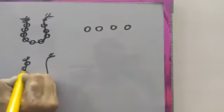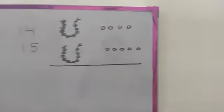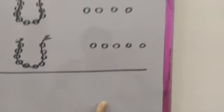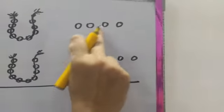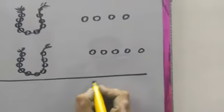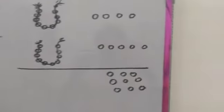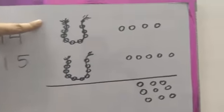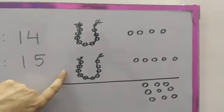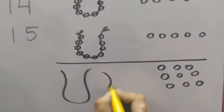Now we will find out how many beads they have altogether. First, let's count the loose beads: 1, 2, 3, 4, 5, 6, 7, 8, 9 — they have 9 loose beads. Now let's count the necklaces: 1 necklace of 10 beads and 1 more necklace of 10 beads — that's 2 necklaces of 10 beads.